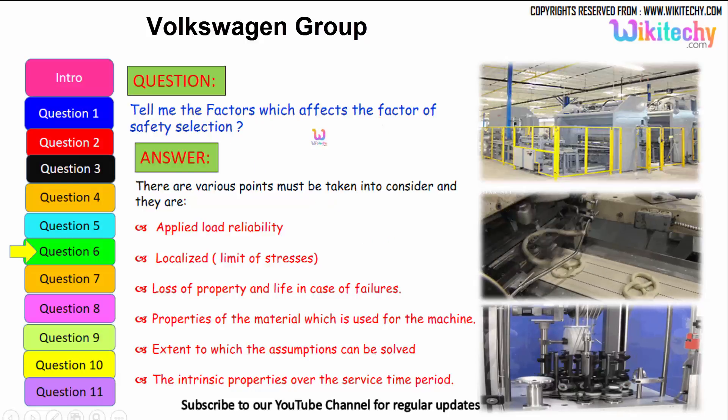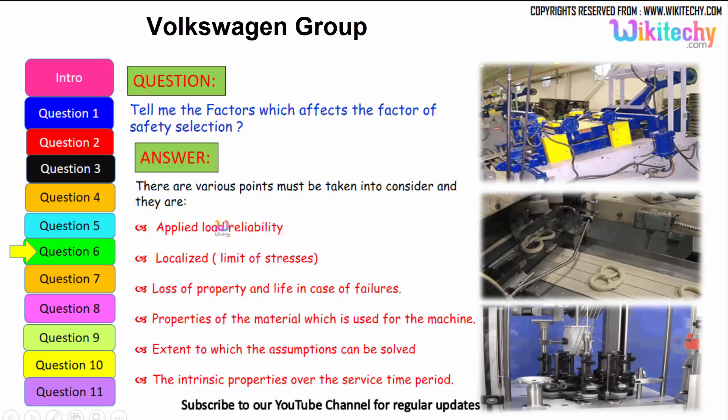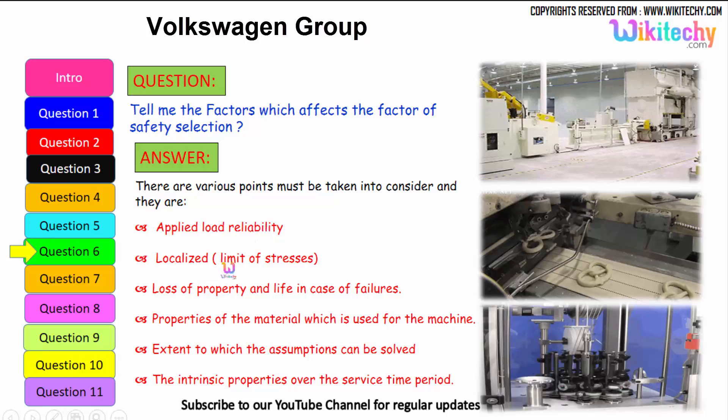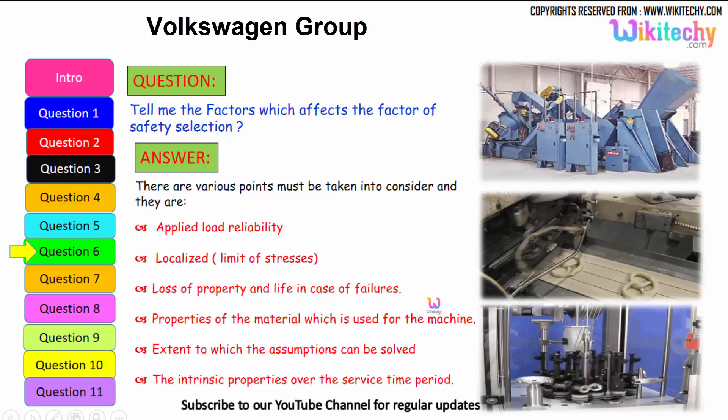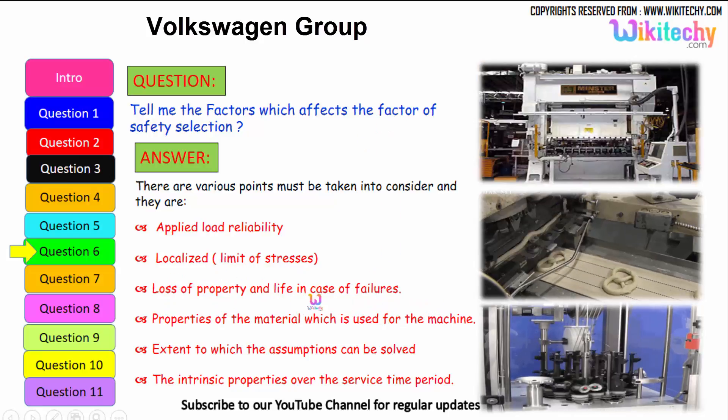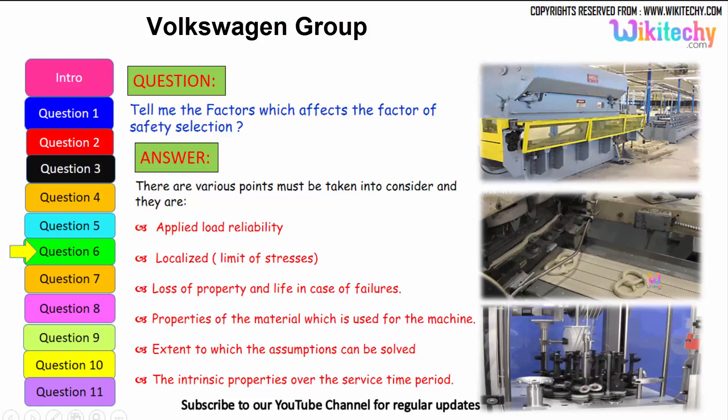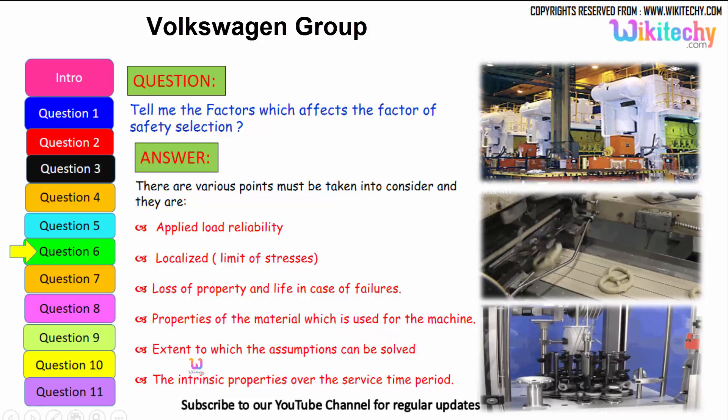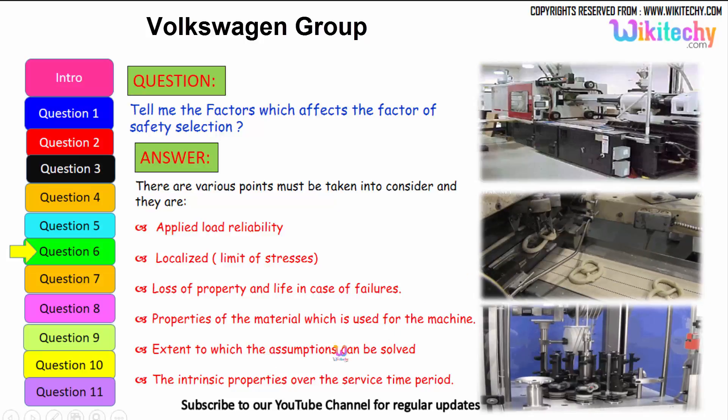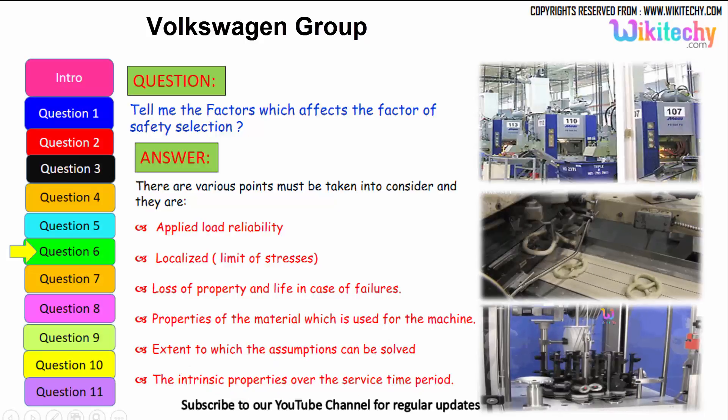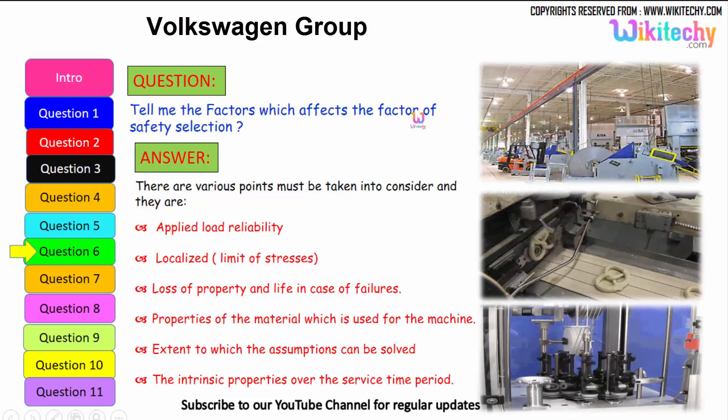Now, let us see the factors which affect the factor of safety selection. Here are some of the factors: reliability of load applied, limit of stresses thus localized, loss of property and life in case of failures. This is a very important factor you should understand on safety selection. Properties of the material which is used for the machine, what kind of material you are using. The extent to which the assumptions can be solved, how much it will extend, compress or something like that, everything to be solved. The intrinsic property over the service time period, how it will sustain, everything we need to manipulate for the factor of safety selection.